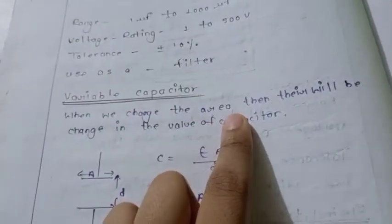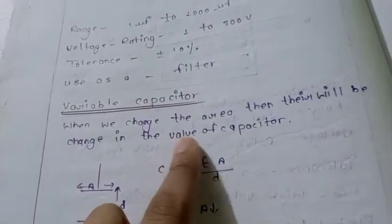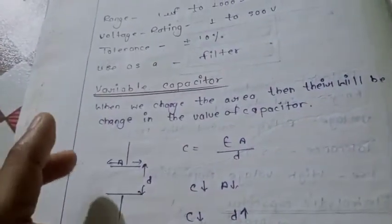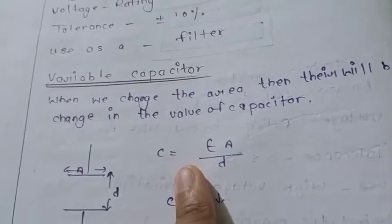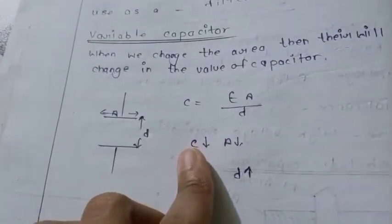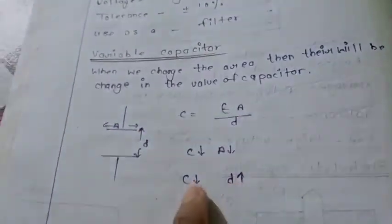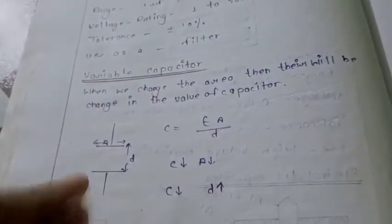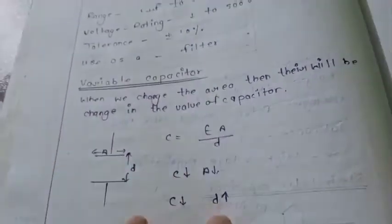Variable capacitor: when we change the area, there will be a change in the value of capacitance. The formula is C equals epsilon A by D. When the area increases, capacitance increases. When distance increases, capacitance decreases. When distance decreases, capacitance increases.